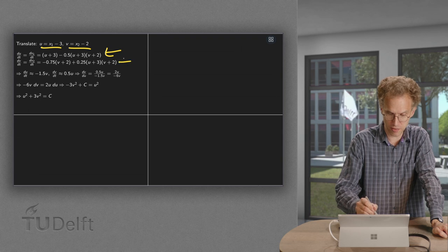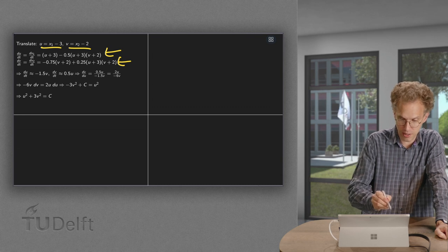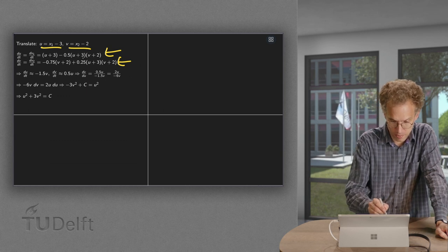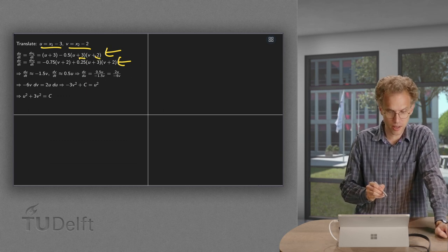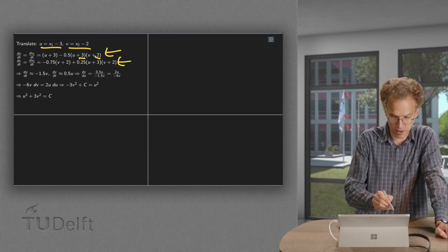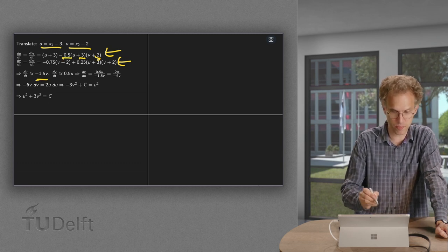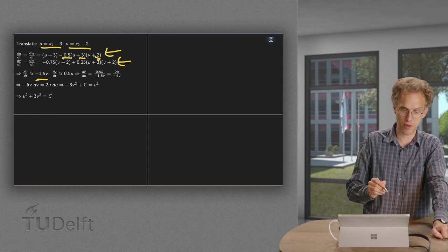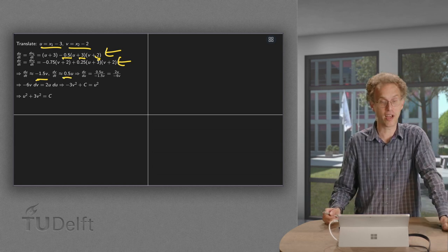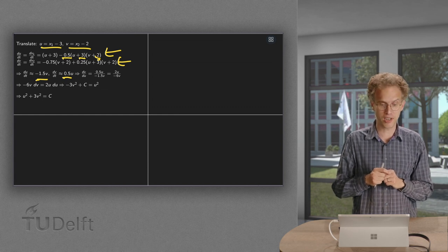And now we see if we linearize du/dt, we have u plus 3 and the minus 3 cancels out. And linearly we have minus 1.5v left because the u is cancelled out by the minus half times 2. So linearly du/dt equals minus 1.5v. Similarly, linearly dv/dt equals 0.5 times u, which gives us of course exactly those purely imaginary eigenvalues.